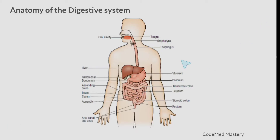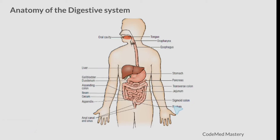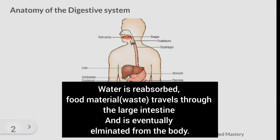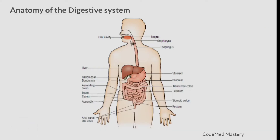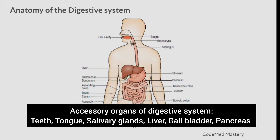The duodenum is the first portion of the small intestine. Next is the jejunum, the middle third of the small intestine. The ileum is the last and longest section, where most food absorption takes place, and it connects to the large intestine. The large intestine is divided into the cecum, appendix, ascending colon, sigmoid colon, rectum, and anus. Water is reabsorbed as food material travels through the large intestine and is eventually eliminated. Accessory organs include teeth, tongue, salivary glands, liver, gallbladder, and pancreas.